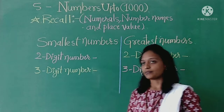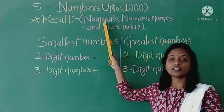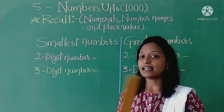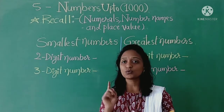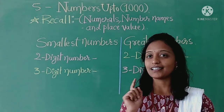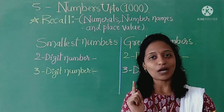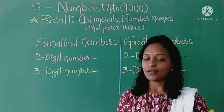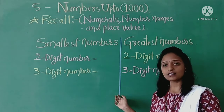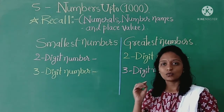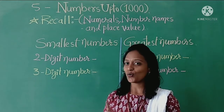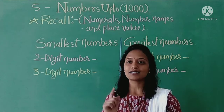We have learnt the numerals from 1 to 400. I have given you the homework to write down numerals from 401 to 500. I hope you have done your homework. Let us have the chart of numerals. Just go through it. If you have written correctly, good. If not, no worries — just make it correct.